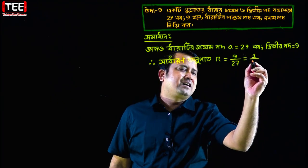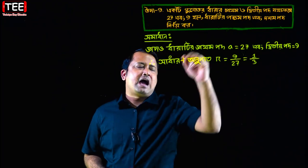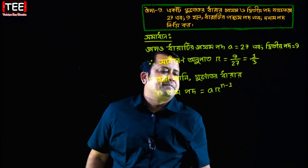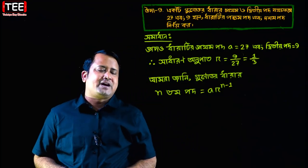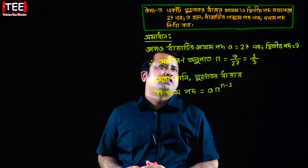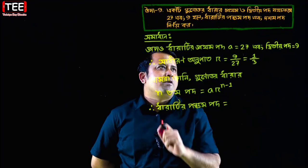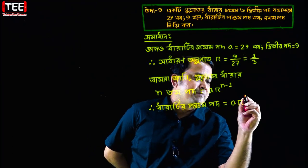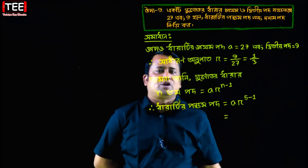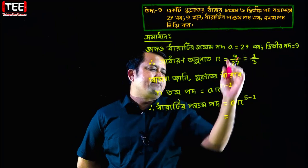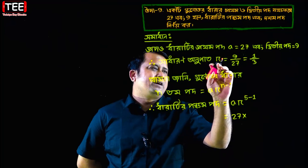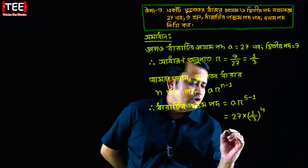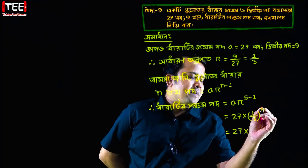Let's look at the general term of a geometric series. For n=5, we apply the formula: a times r to the power (n minus 1). Now we will substitute the values and find the term. Let's also set up the next term's value.